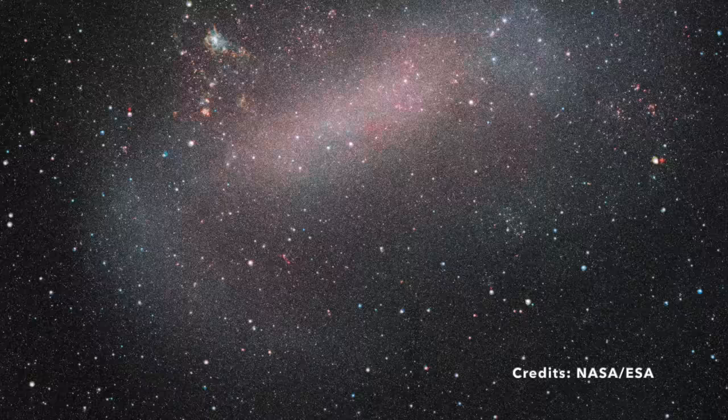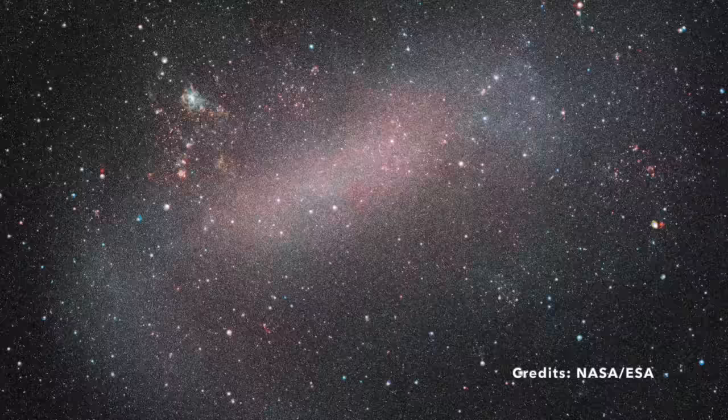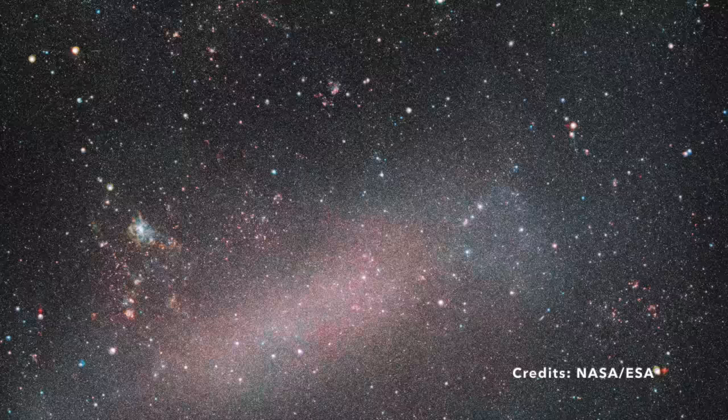But what sets the LMC apart? Its shape, for one. Unlike the neatly defined spirals or elliptical formations we often associate with galaxies, the LMC belongs to the irregular type. This means it doesn't follow a conventional pattern or structure. Imagine a painter flinging paint in spontaneous streaks on a canvas, and you might get a picture of how the LMC looks in our vast cosmic gallery.